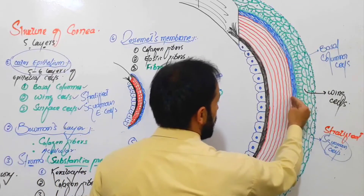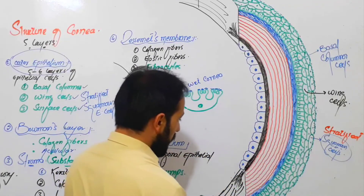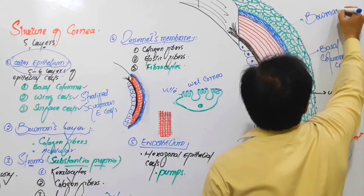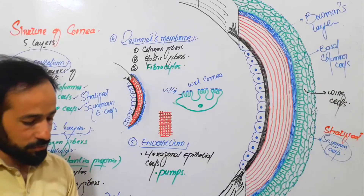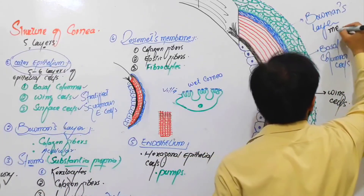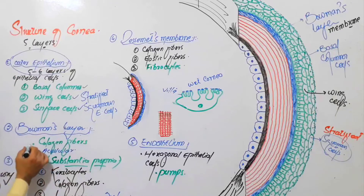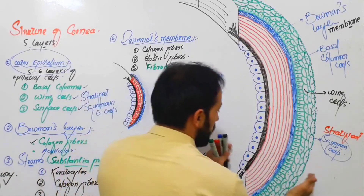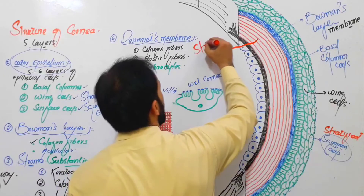Beneath or posterior to the epithelium, you can see the blue layer, and this blue layer is called Bowman's layer, or Bowman's membrane. About Bowman's membrane: it is acellular and it contains collagen fibers. Then the third layer — the thickest layer — is called the stroma of the cornea.